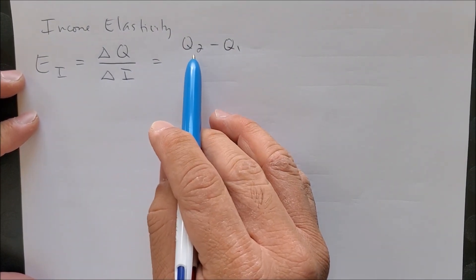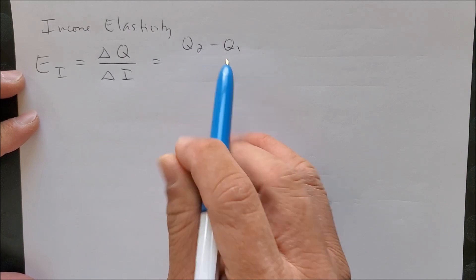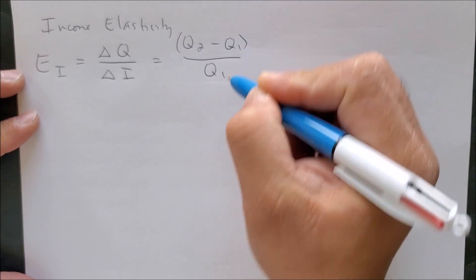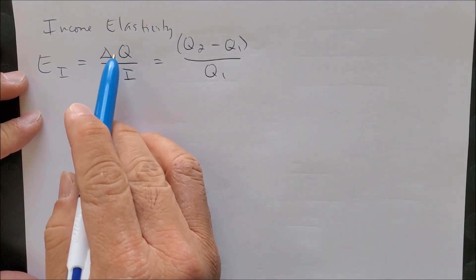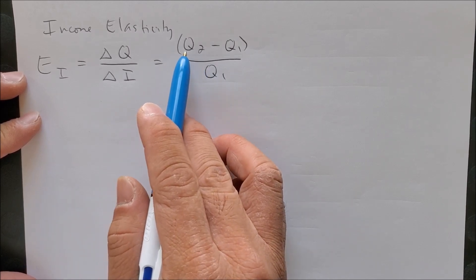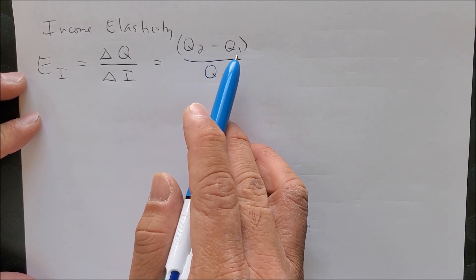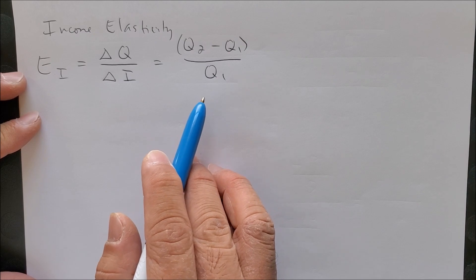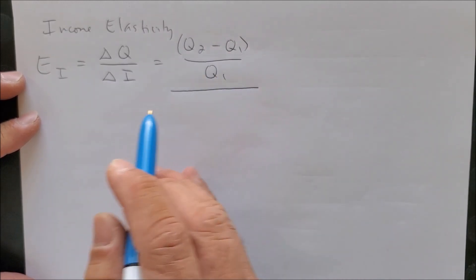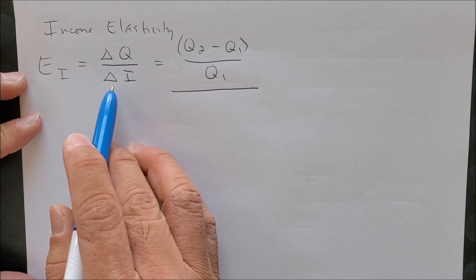So this Delta Q is now represented in this equation format of Q2 minus Q1 over Q1. If this is true for the numerator, it must be true for the denominator as well.